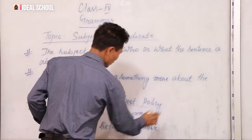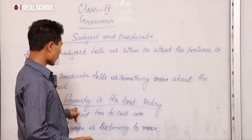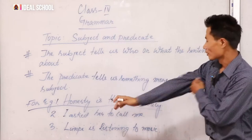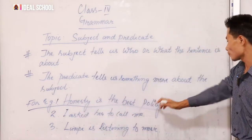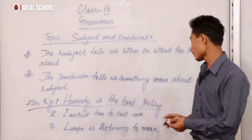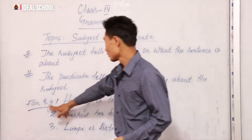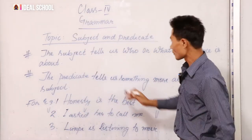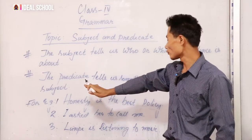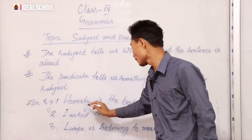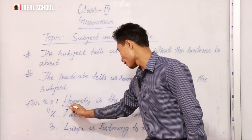Now let us see some examples of subject and predicate. Number one: 'Honesty is the best policy.' From here, let us see what is a subject or predicate. Subject means it tells about who or what.